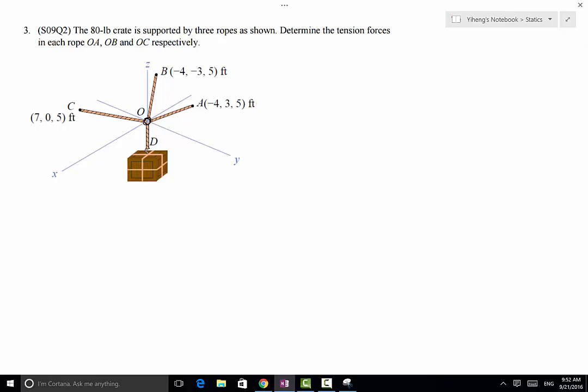These three cables all start from point O, and the coordinates of their endpoints, ABC, are given. We need to determine the tension force developed in each rope if the system is in equilibrium.